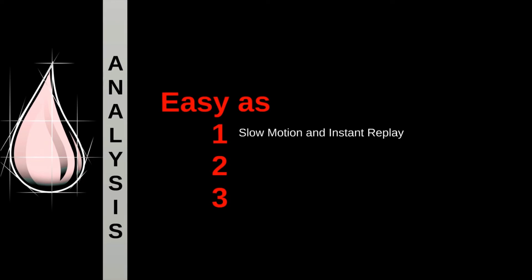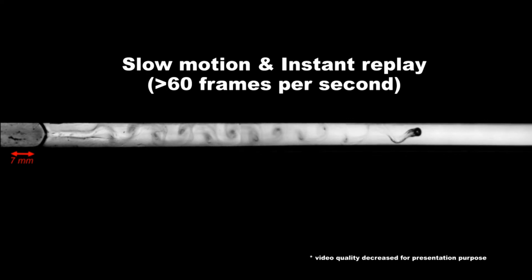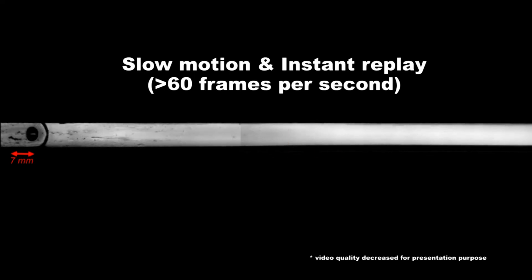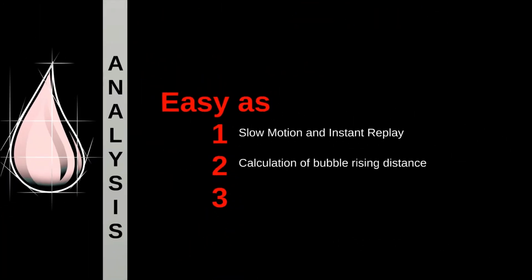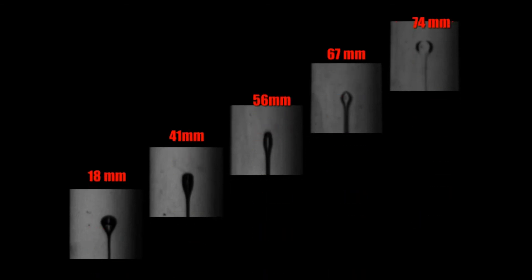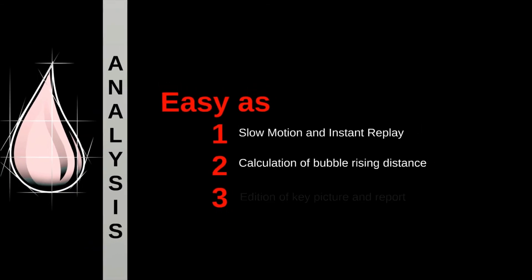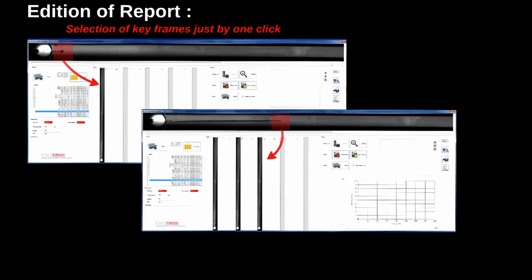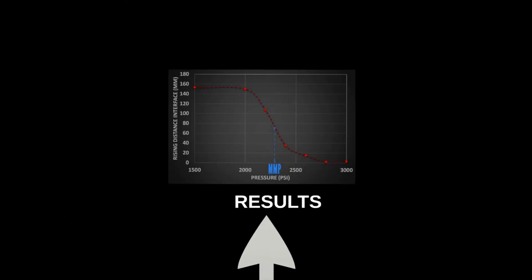After the experiment, all the movies are analyzed. The post-processing software enables slow motion and instant replay of all the steps. For example, here you can see a bubble rising above the MMP. Tail formation is easily visible thanks to the high-speed acquisition and LED lighting. The software also enables quick measurement of the rising distance of the bubble — at any step, the distance can be measured from the software. At the end, the operator can edit a report with the key pictures. For each movie, just by a click, the end user selects the relevant picture to include in the report. The software automatically generates a slideshow with the key frames, and the curve of rising distance versus pressure is also generated by the software to interpolate the MMP.